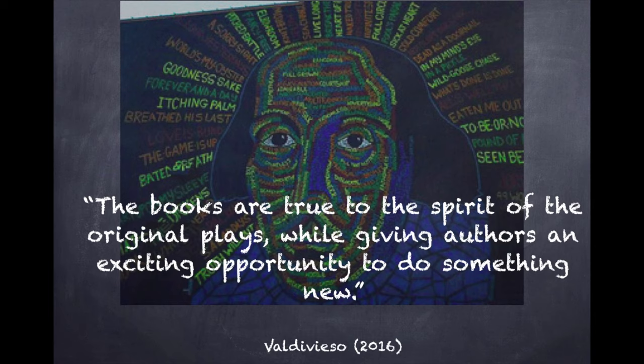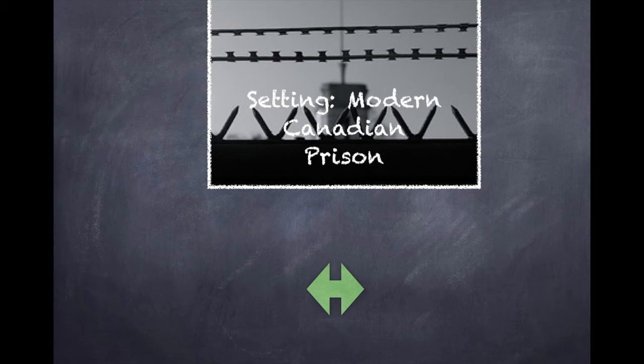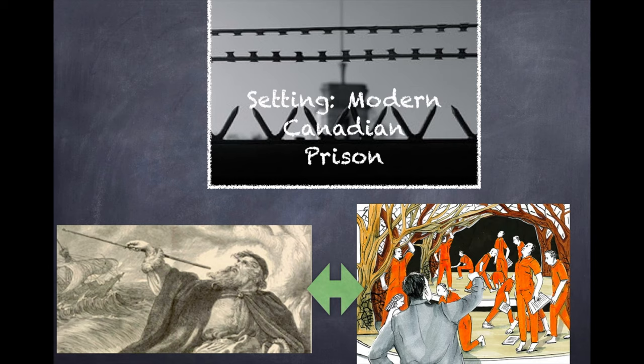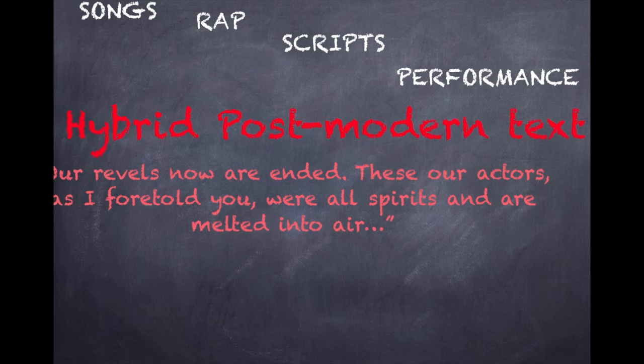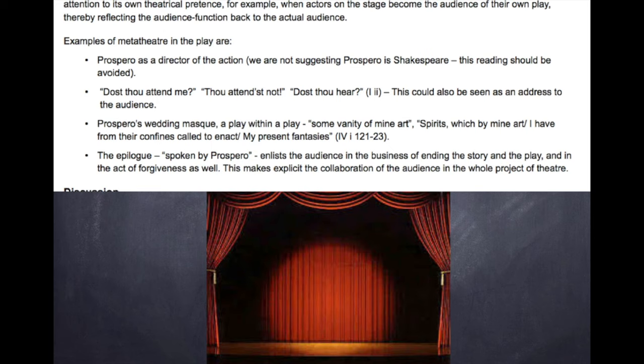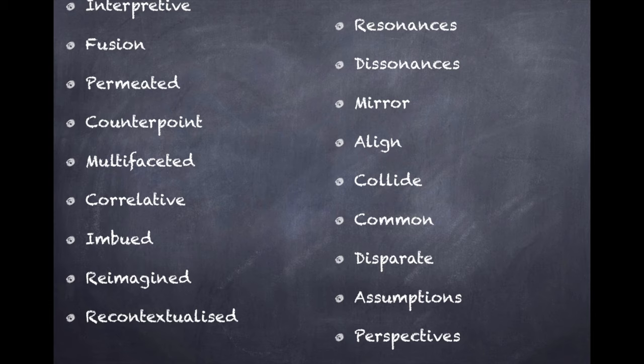It is this combination of something new in Hag-Seed, set in a modern day Canadian prison, with Atwood's constant textual conversation throughout with The Tempest that make the text so compelling. This is a hybrid postmodern text — it uses songs, rap, script and performance, and has strong metafictional elements, echoing the strong metatheatrical elements in The Tempest. The multi-layered aspects of this text must be emphasised in an essay response.